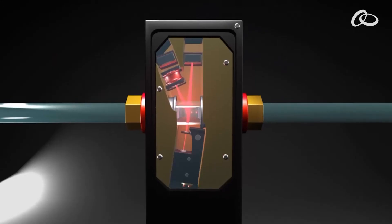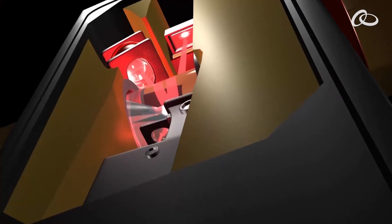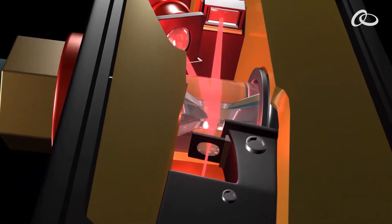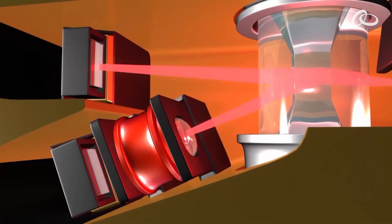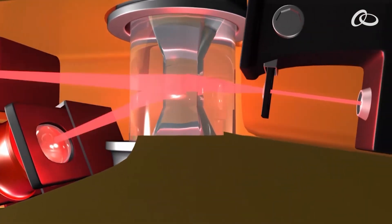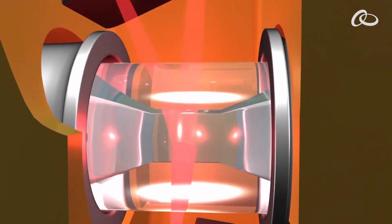As particles in a liquid suspension pass one at a time through a sensor, they both block and scatter the incident laser light. Both extinction and scattering detectors generate pulses proportional to the size of the particle. A pulse height analyzer converts these pulses into a particle size through the use of a calibration curve.